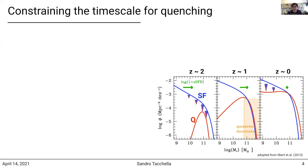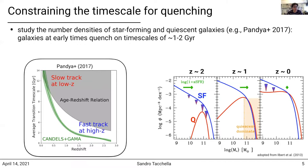In my talk I want to focus around redshift 1 and 2, because that's where most of the central galaxies are quenching. Looking at the number density evolution of star-forming and quiescent galaxies, one can study how quickly galaxies need to transition through the green valley on typical average timescales. In Pandya et al.'s work, galaxies quench quite rapidly at early times, on the order of a few gigayears, and then at later times galaxies take much longer to transition through the green valley.